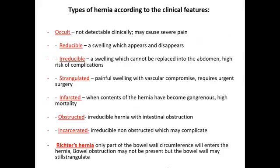Hernias can be classified according to clinical features. An occult hernia is not detectable — it is so small it cannot be seen, but causes severe pain that drives the patient to seek medical advice. Hernias may be reducible — a swelling that appears and disappears — or irreducible. They may also be strangulated, meaning a painful swelling with vascular compromise, which can lead to infarction, gangrenous contents, and high mortality.